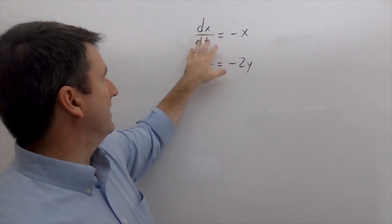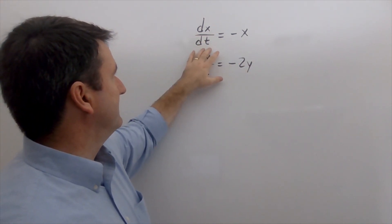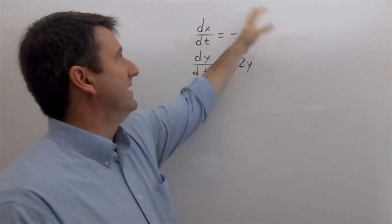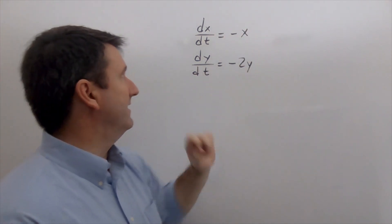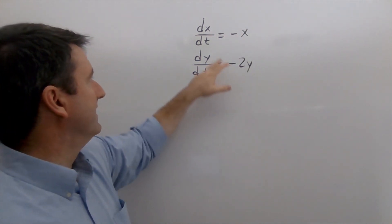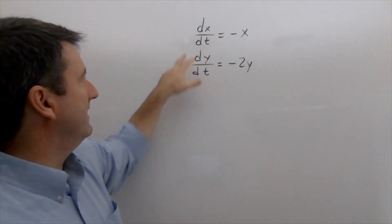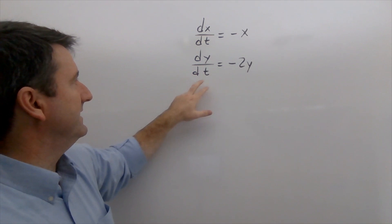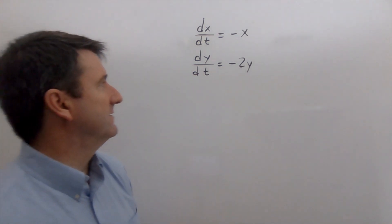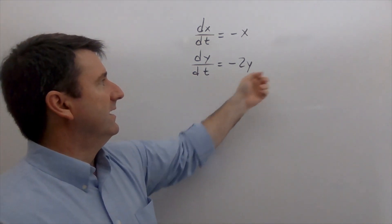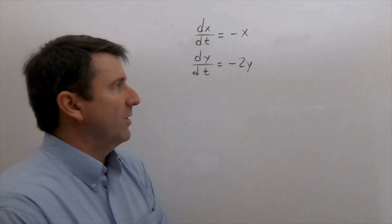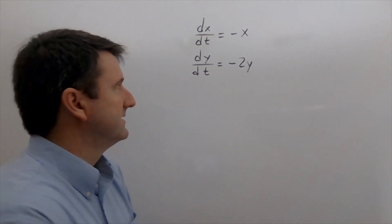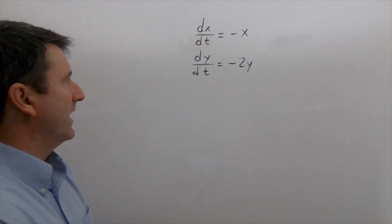So here we have dx/dt equal to negative x — there's no t on the right side. And in the second equation, dy/dt equals negative 2y — no t there either. So this is an autonomous system of equations.